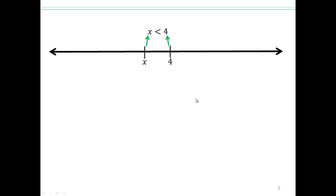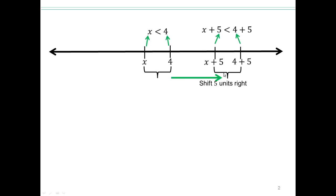Now let's see what happens with an inequality. Let's take x less than 4. On the number line, x sits somewhere to the left of 4. If we add 2 to both x and 4, adding 2 to x moves it 2 units to the right, and adding 2 to 4 moves it 2 units to the right as well. If I add 5, it goes 5 units to the right. But x plus 5 is still to the left of 4 plus 5 — adding a number on both sides of an inequality preserves the inequality.